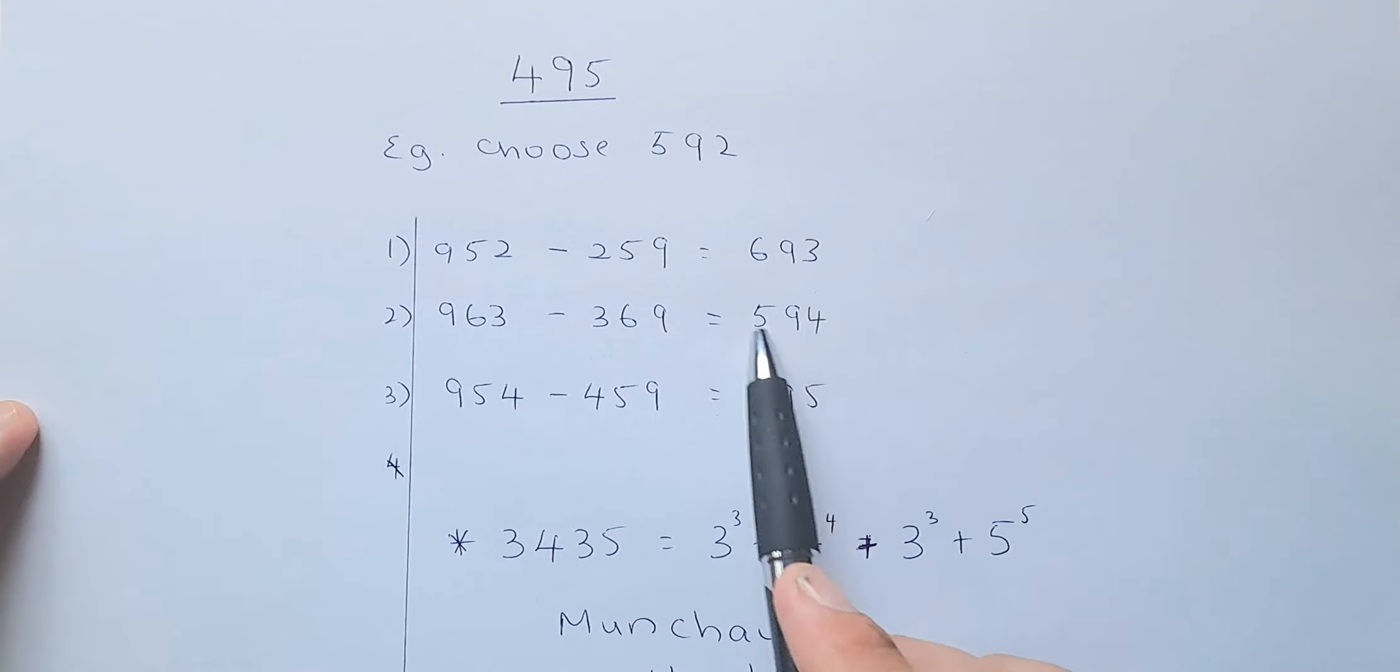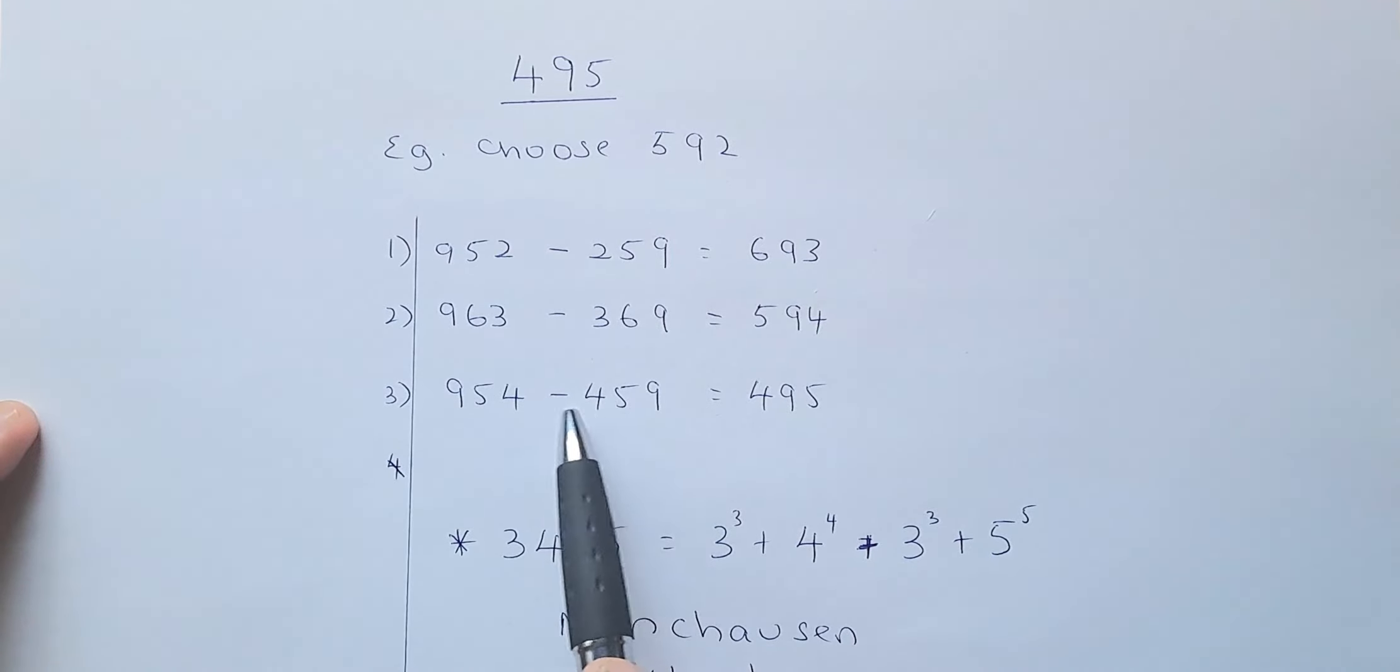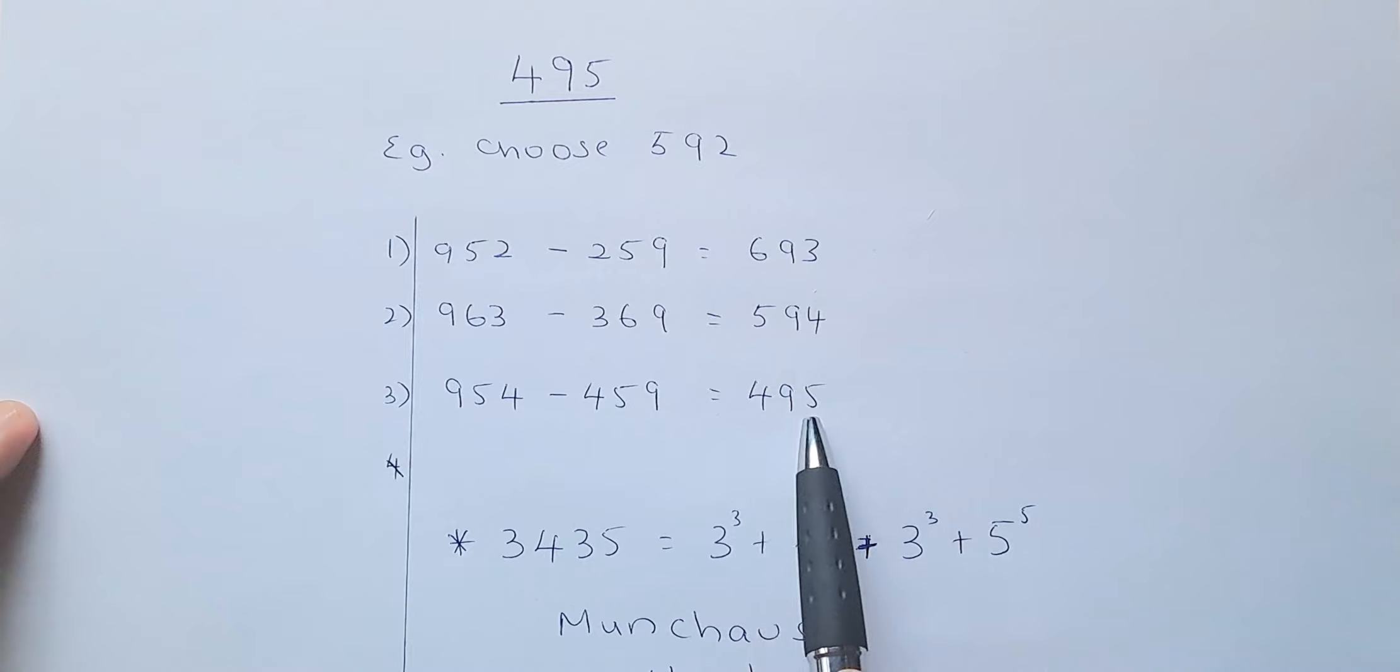Next, you are going to rearrange this, become 954, because biggest to smallest. And then you're going to minus the reverse, 459, or smallest to biggest. And you're going to get 495.